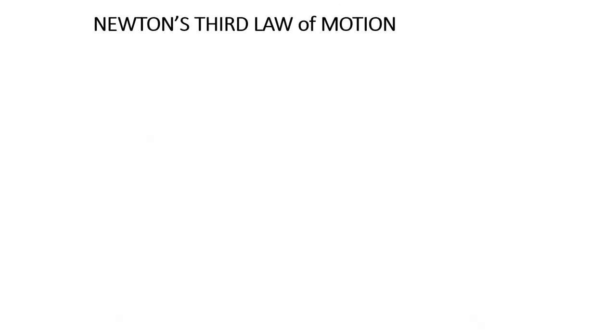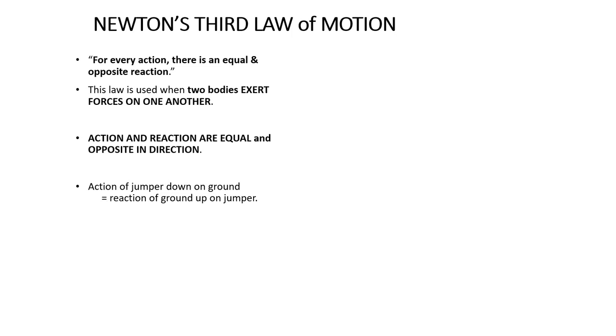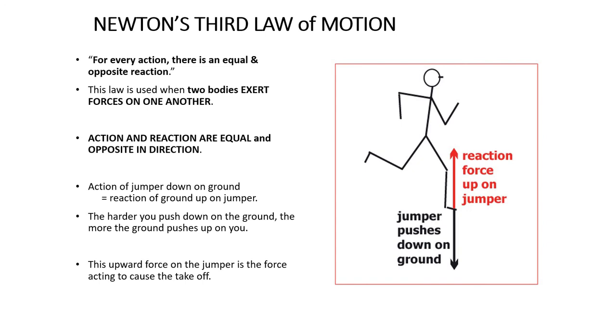And so we come to the third law of motion. So Newton's third law of motion is the law of action and reaction. So for every action, there is an equal and opposite reaction. So this law is used when two bodies exert forces on one another. Action and reaction are equal and they are always opposite in direction. So the action of a jumper, like a high jumper, down on the ground will result in a reaction of the ground up on the jumper. This reaction, so the jumper pushing really hard down on the ground, will cause the ground to push up on the jumper. And the upward force on the jumper is the force that actually allows the jumper to take off. So here you can see a diagram. So you've got the reaction force up on the jumper in red. And the black arrow is the jumper pushing down on the ground. And that's what allows the jumper to take off from the ground.